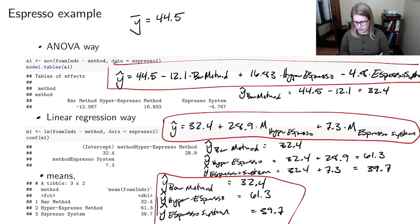And so if you were going to do it the ANOVA way, you'd need to start with the grand mean, the overall mean, and then have the differences from the mean for each of the groups.